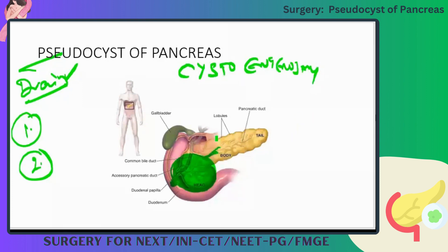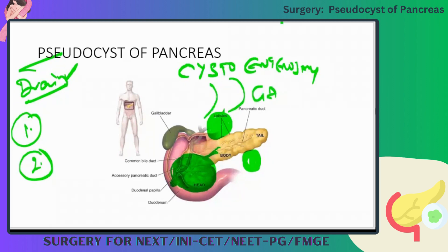The pseudocyst can be located anywhere — in the tail, in the head. Depending upon the anatomical location, if it is located near the stomach, we drain it into the stomach: that is known as cystogastrostomy. If it is near the duodenum, we do a cystoduodenostomy. If it is near the jejunum, we do a cystojejunostomy.